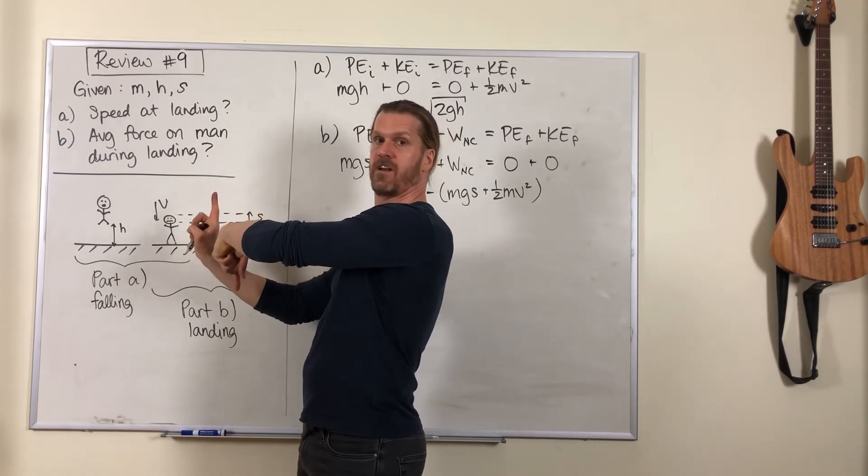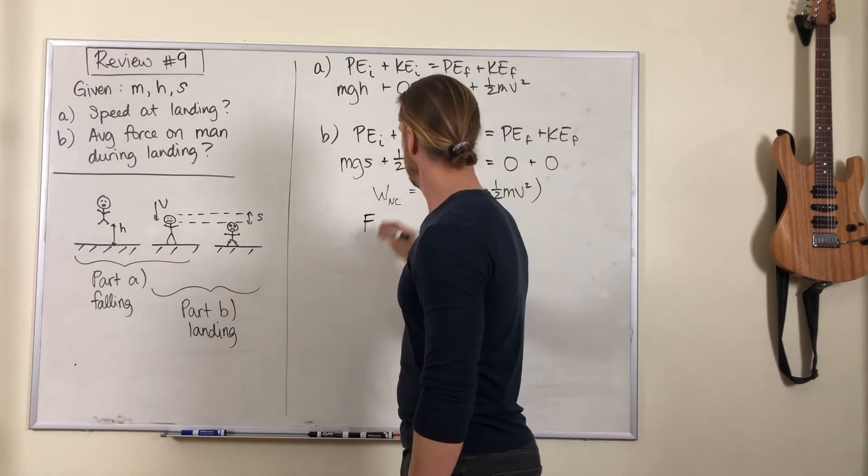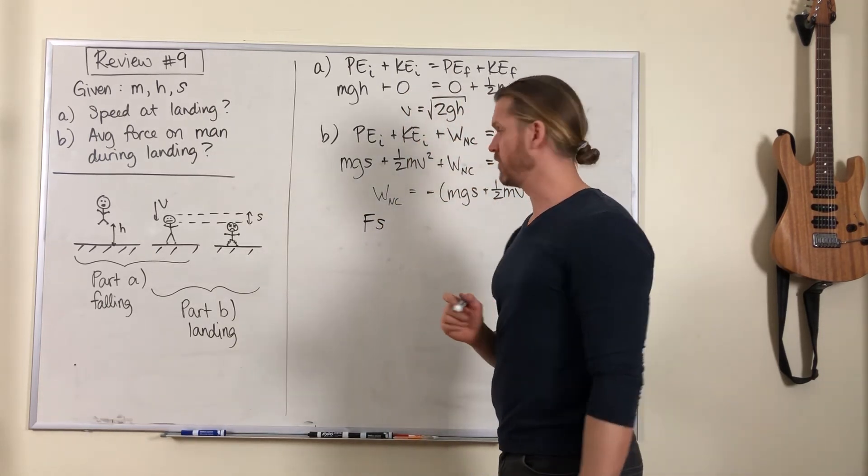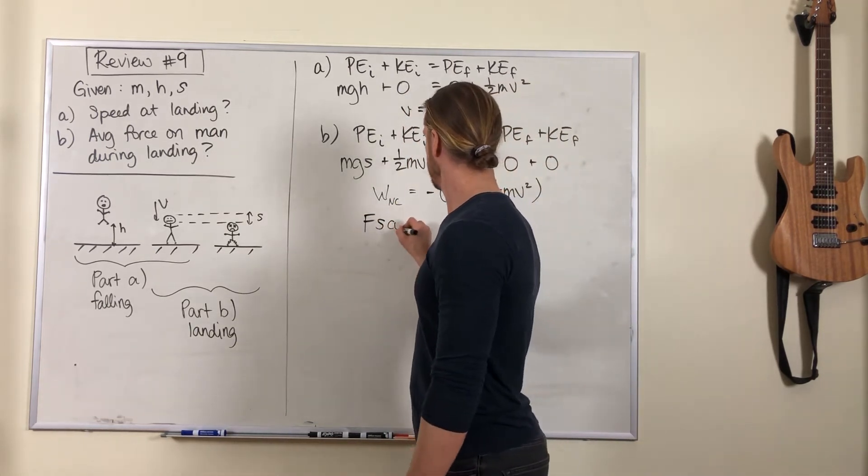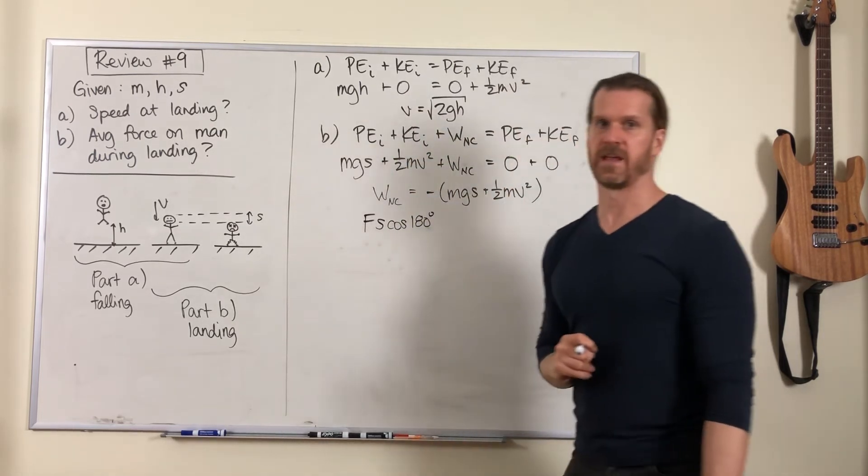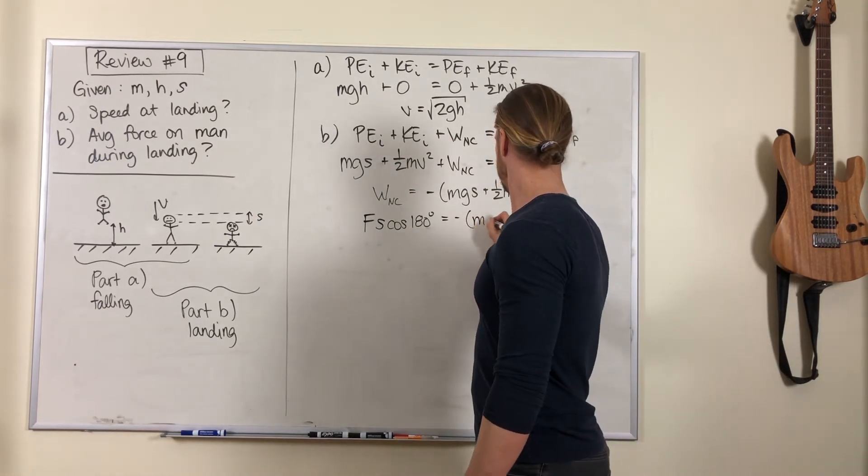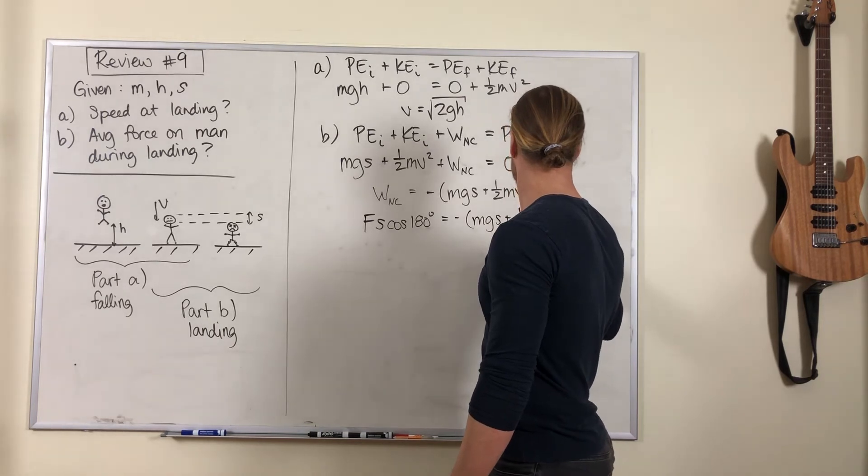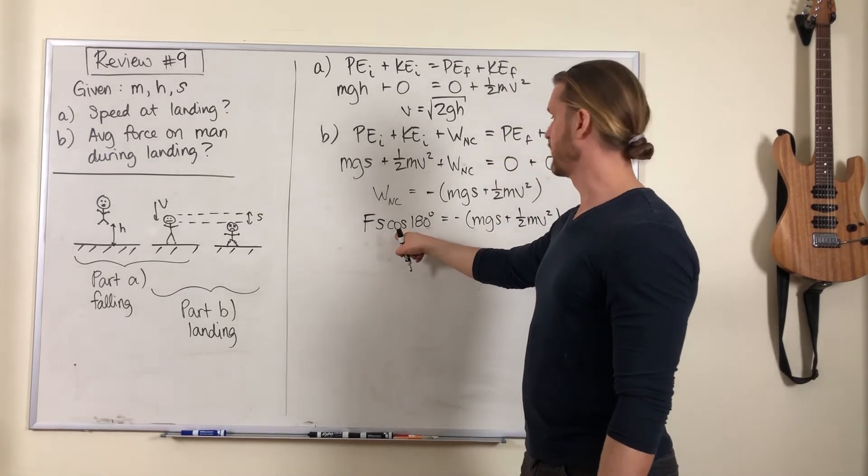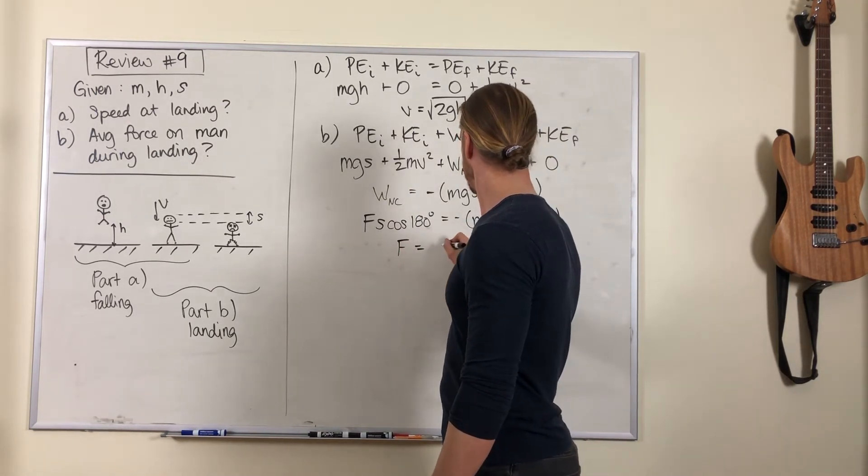The ground is applying upward force on the guy, he's moving down by this distance s, so the force vector and displacement vector are in opposite directions. We've got the force from the ground times the magnitude of the displacement times cosine of the angle between them, 180 degrees.